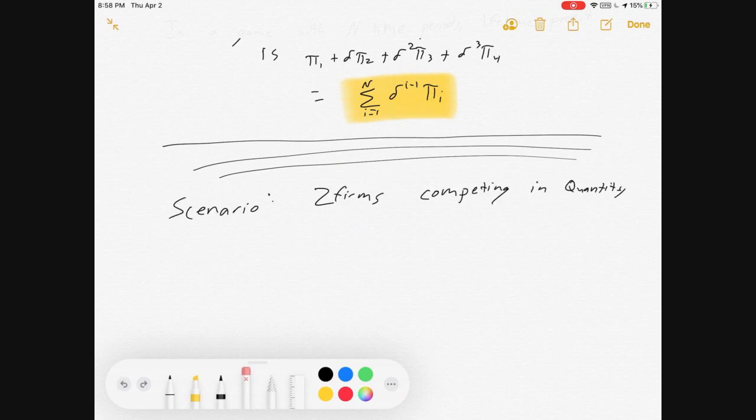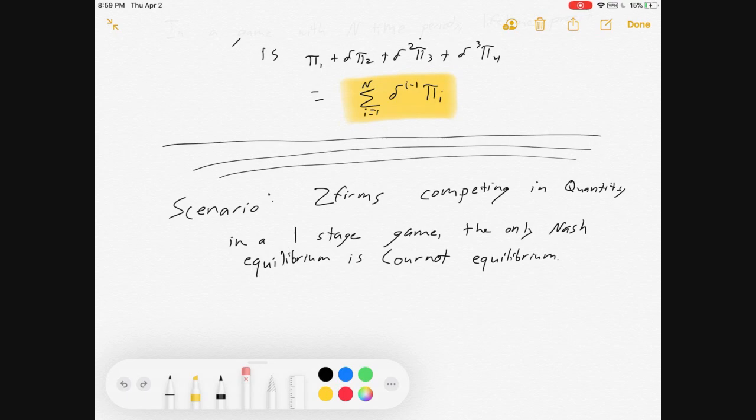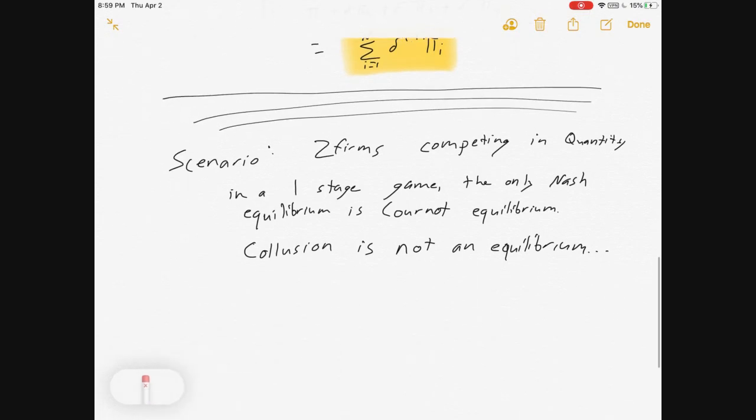So let's get a little scenario here. There's two firms, and they're competing in quantity, or Cournot competition. And if it was a one-stage game, the only Nash equilibrium is Cournot. And I've got other videos on how to solve for how they behave in that situation.